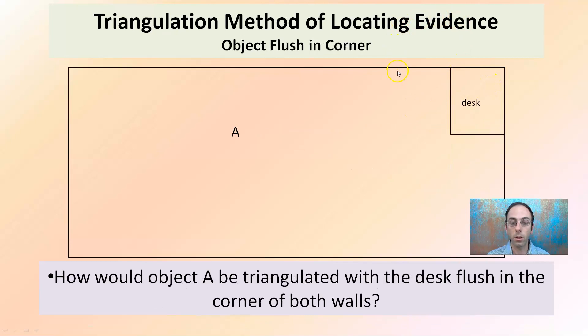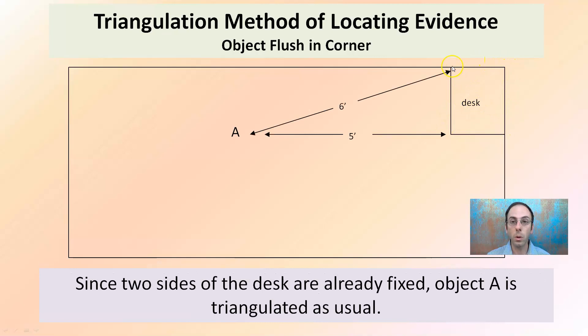How would it be flush to both walls? If it was stuffed in the corner, how do we do that? Well, we don't have to establish the desk at all. We can just measure from those corners of that desk to get the triangulation where point A is located.